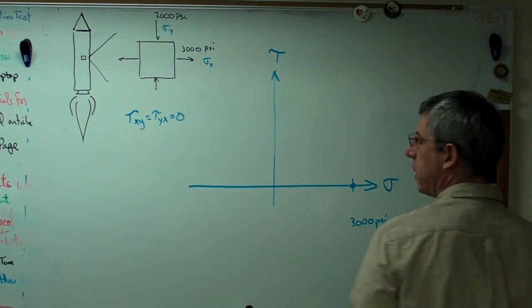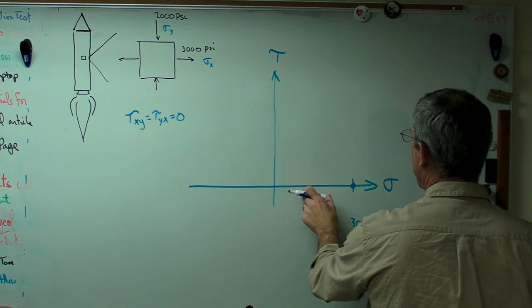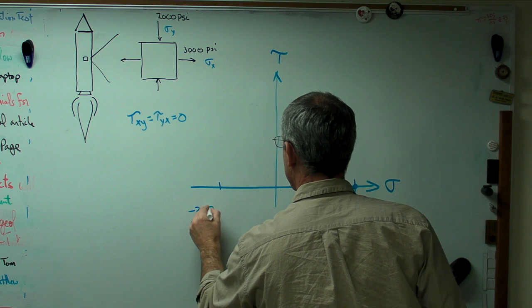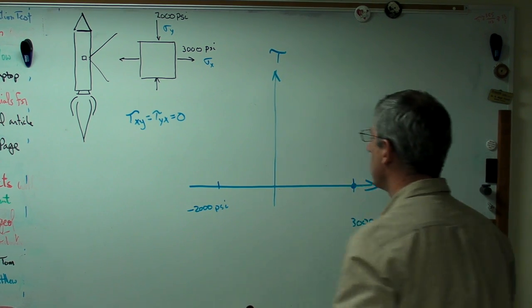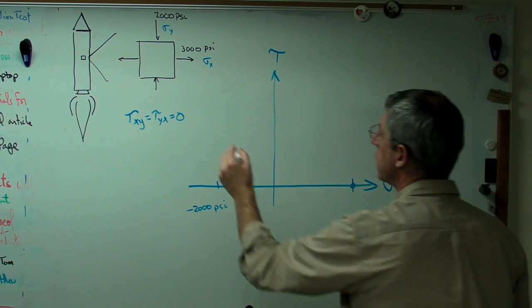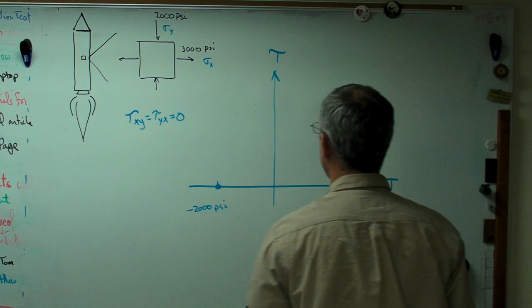I'm going to kind of eyeball this here. If that's 3,000 psi, I'm going to call that minus 2,000. Same thing. What's the vertical position on the vertical axis? It's zero. So I'm going to put my second point right there.